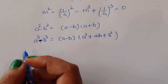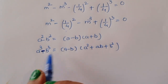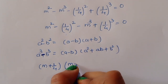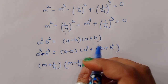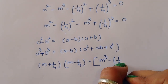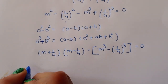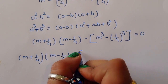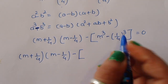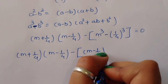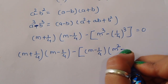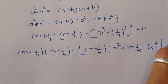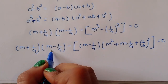Applying the first formula, a squared minus b squared gives (a minus b)(a plus b), so we write (m plus 1 upon 4)(m minus 1 upon 4). Then minus m cubed minus 1 upon 4 cubed equals 0. So we get: (m plus 1 upon 4)(m minus 1 upon 4) minus (m minus 1 upon 4)(m squared plus m times 1 upon 4 plus 1 upon 4 squared) equals 0.